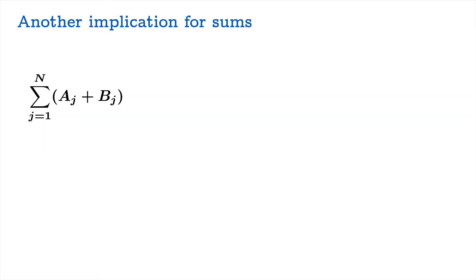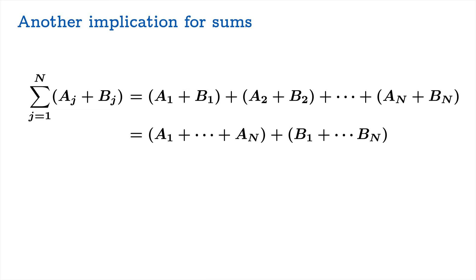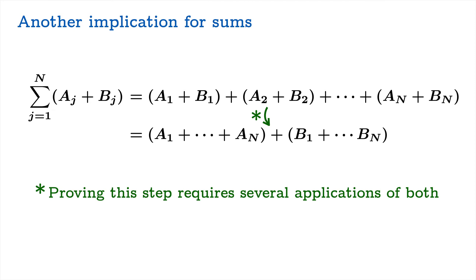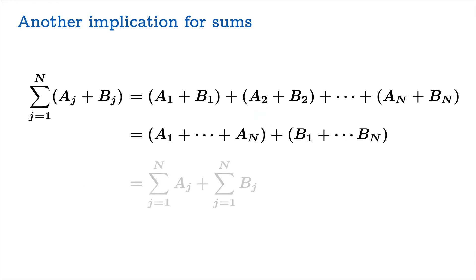Now let's go back to sums. Suppose you had a bunch of aⱼ's and bⱼ's, and you're adding up term by term: a₁ plus b₁, a₂ plus b₂, and so on. We know we can rearrange all of this to split the sum — adding up all the aⱼ's individually and all the bⱼ's individually and then combining those two sums. Formally proving this requires repeated applications of the commutative and associative properties.